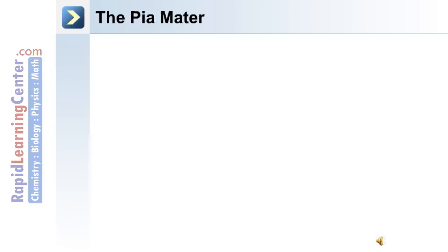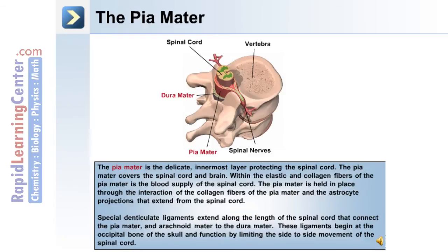The innermost layer of the meninges is the pia mater, a delicate layer that protects and covers the spinal cord and brain. Within the elastic and collagen fibers of the pia mater is the blood supply of the spinal cord. The pia mater is held in place through the interaction of collagen fibers and astrocyte projections extending from the spinal cord itself. Special denticulate ligaments extend along the length of the spinal cord, connecting the pia mater and arachnoid mater to the dura mater, functioning to limit side-to-side movement.